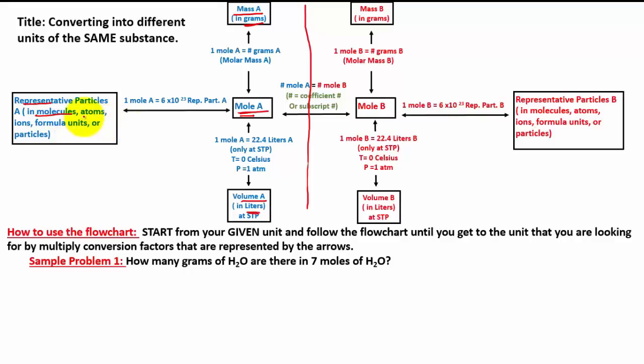Then we have representative particles in atoms. These are particles in atoms, like we have hydrogen itself, carbon, nitrogen. Those are in atoms. And then we have ions. These are atoms with a positive or a negative charge, or we have polyatomic ions with a positive and negative charge. Lastly, we have formula units. Formula units are to represent particles that are ionic bonds.